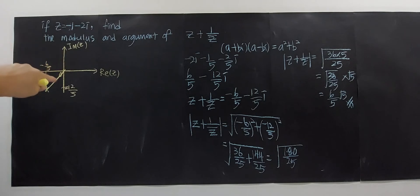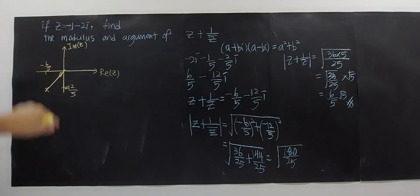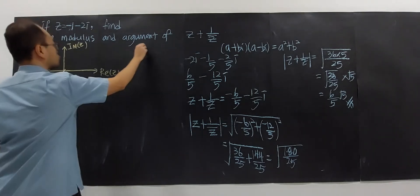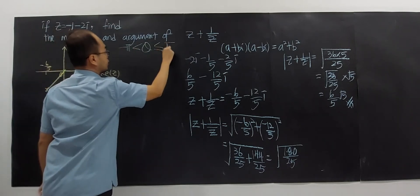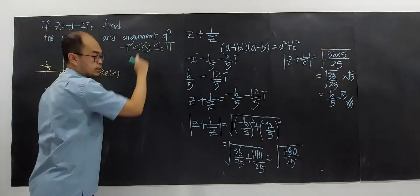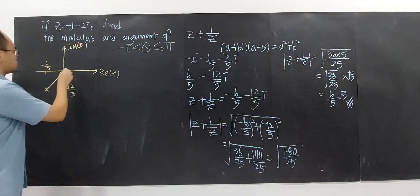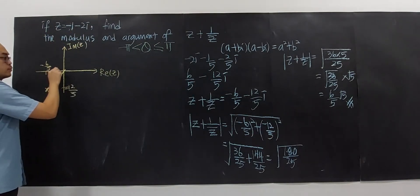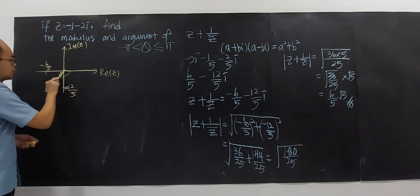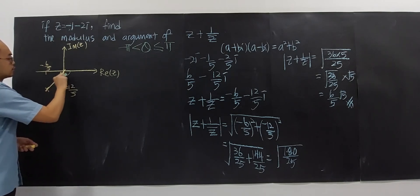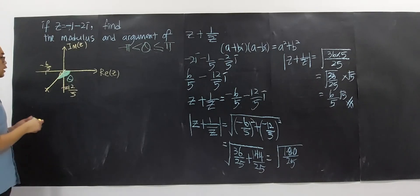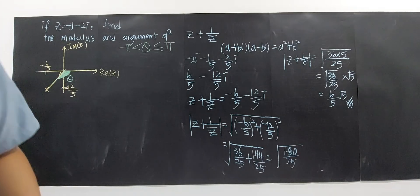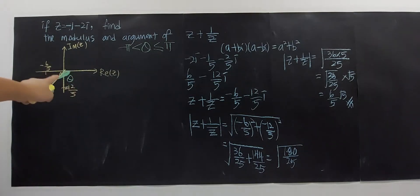Remember that the argument can only take values between negative pi and pi, or negative 180 and 180 degrees. Since the point is in the third quadrant and the angle is measured clockwise, we need to find the reference angle alpha first — the acute angle in the triangle.